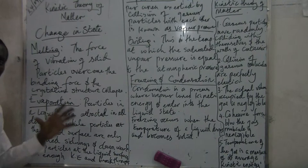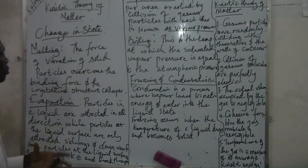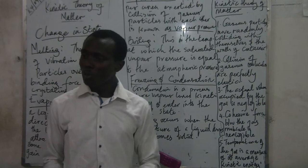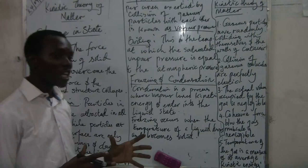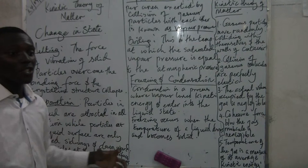For melting to take place, there is a condition: the force of vibration of solid particles must overcome the binding force. When solids are formed, solids are actually formed as crystallites. And there is a binding force that keeps these particles together and makes it the solid — that is, there's an attraction between the molecules.